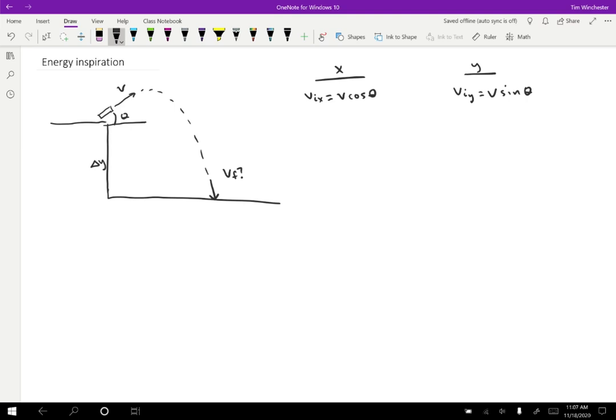In the X direction, this is an ordinary projectile motion problem. So the speed is going to stay constant in the Y direction. We have an acceleration. So the acceleration is going to be equal to negative G because it's accelerating downward. The delta Y we're given as delta Y. So we know what that's going to be.